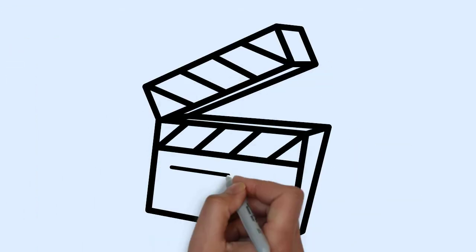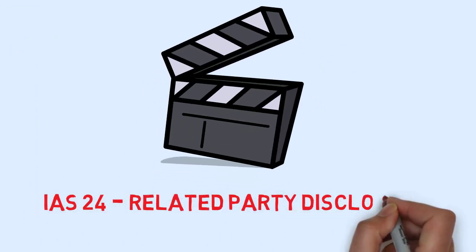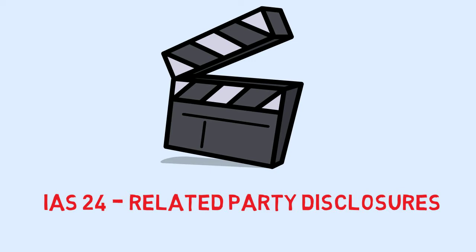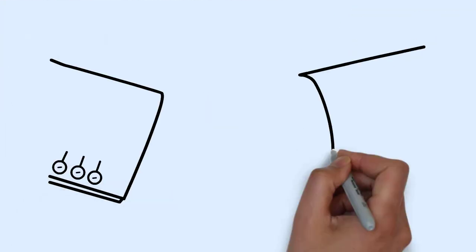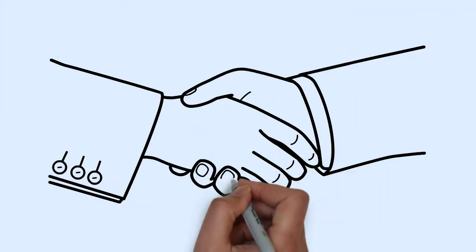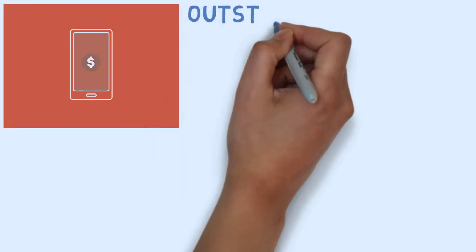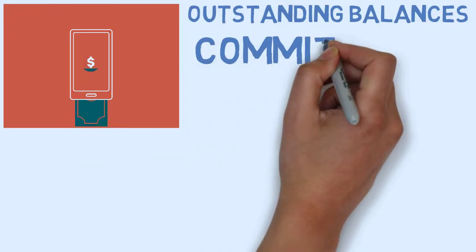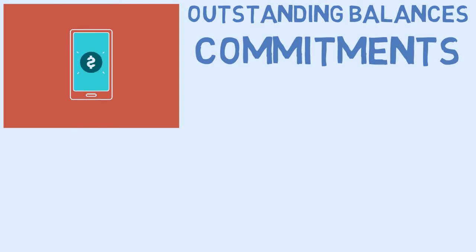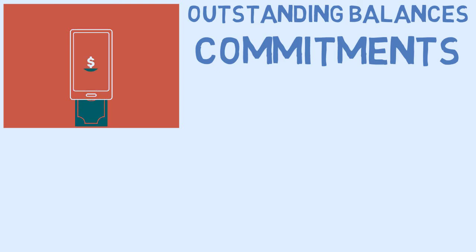In this video we will be talking about IAS-24, Related Party Disclosures. IAS-24 is applied in identifying the related party relationships and transactions, outstanding balances and commitments between an entity and its related parties, and disclosures about these items.